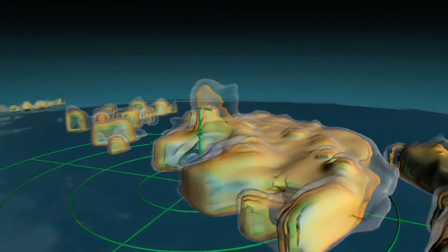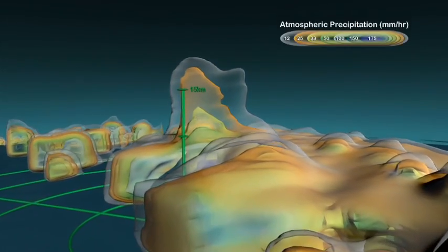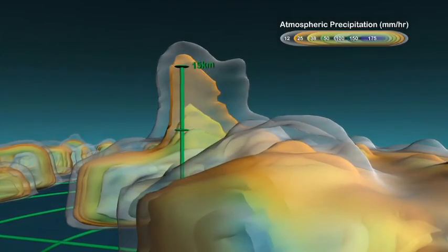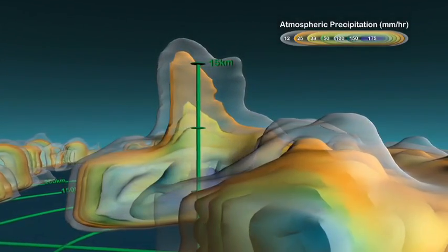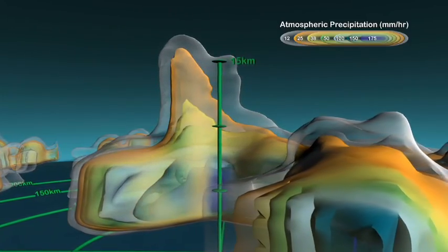Using TRMM measurements, scientists identified a dramatic feature in the structure of Hurricane Bonnie. Towering rain clouds close to the eyewall nearly reached the stratosphere.